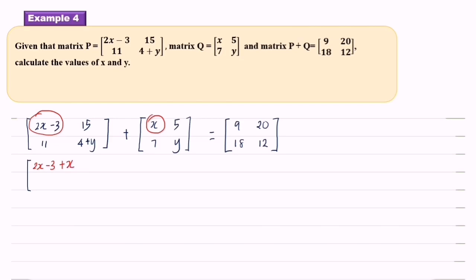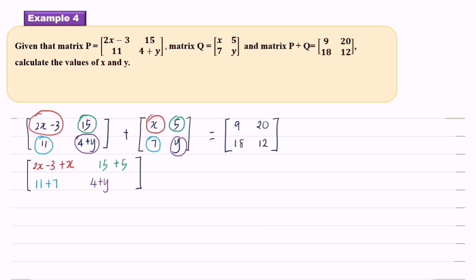The next element: 15 plus 5. Then 11 plus 7. Then 4 plus Y plus Y. This equals 9, 20, 18, 12.